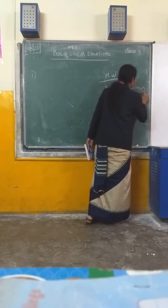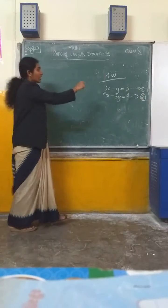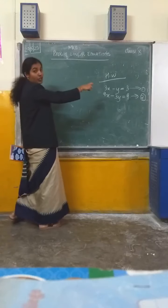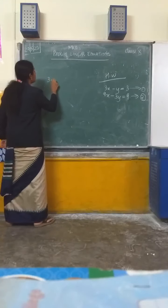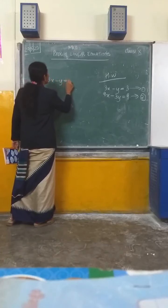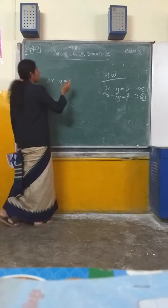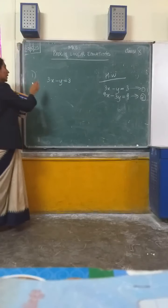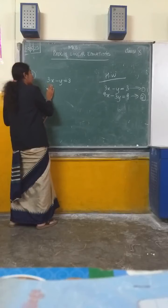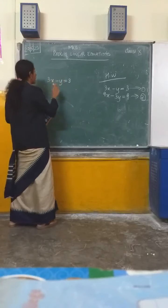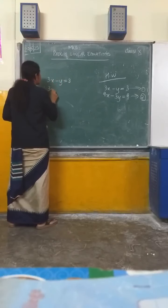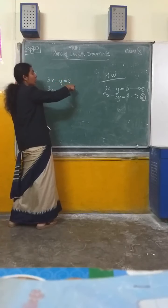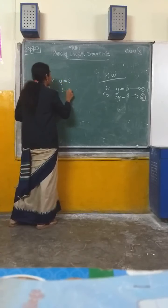First you should consider equation number 1. What is equation number 1? 3x minus y equal to 3. Write any variable in terms of the other. So I am writing x in terms of y. How can you write it? 3x equal to 3 plus y — when you shift y to the right side, you will get 3 plus y.